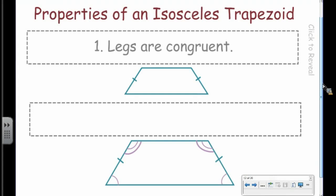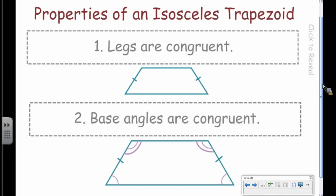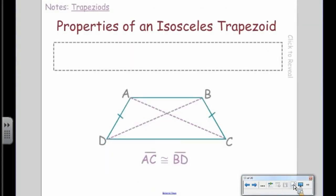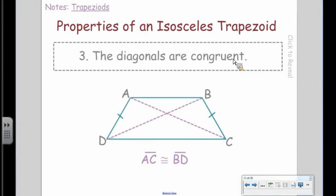What do you think the second property of an isosceles trapezoid is? The base angles in an isosceles trapezoid are congruent — just like in an isosceles triangle. A trapezoid is honestly just a triangle with the top cut off. So if the legs are congruent, the base angles are congruent.